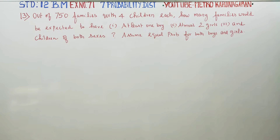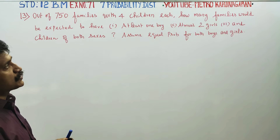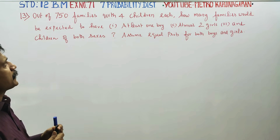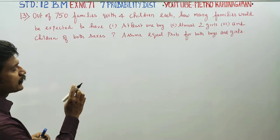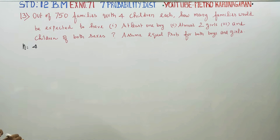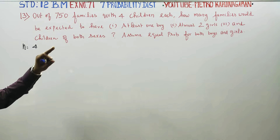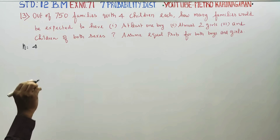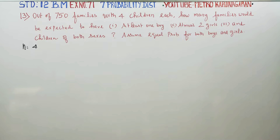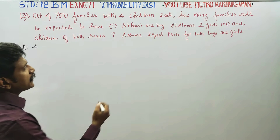Dear Tools Standard Business Max students, I am Etro Karanagaran. In exercise no. 7.1, sum no. 13: out of 750 families with 4 children each, how many families would be expected to have at least 1 boy, at most 2 girls, and children of both sexes? Assume that the probability of both boys and girls are equal.